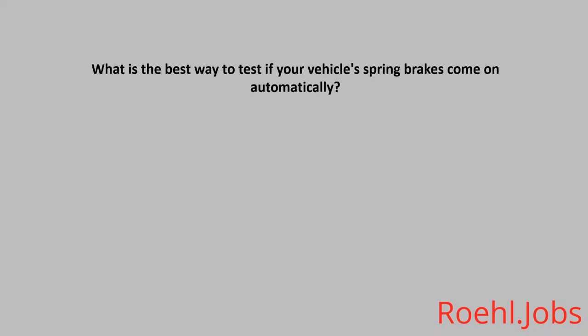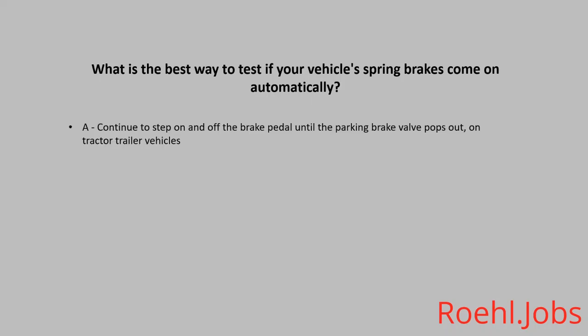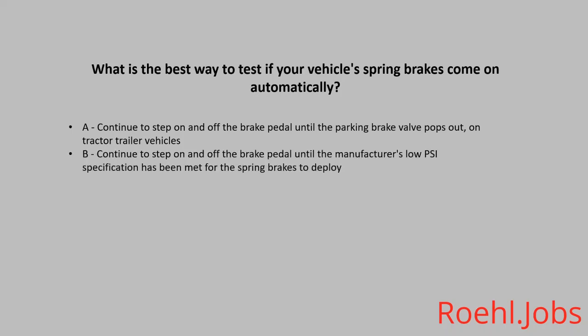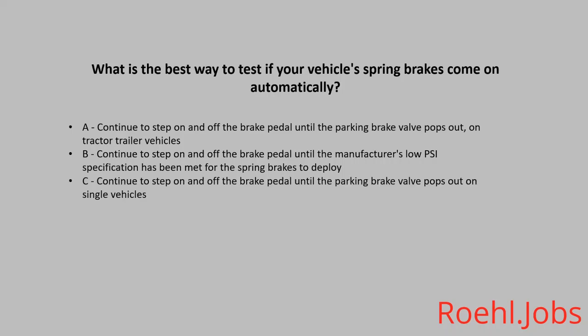What is the best way to test if your vehicle's spring brakes come on automatically? A. Continue to step on and off the brake pedal until the parking brake valve pops out on tractor-trailer vehicles. B. Continue to step on and off the brake pedal until the manufacturer's low PSI specification has been met for the spring brakes to deploy. C. Continue to step on and off the brake pedal until the parking brake valve pops out on single vehicles. D. All of the above. The answer: D. All of the above.